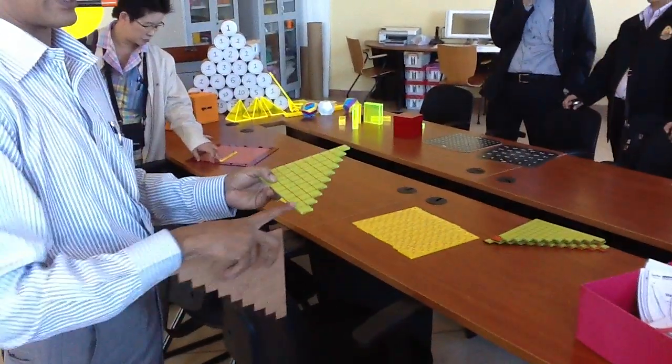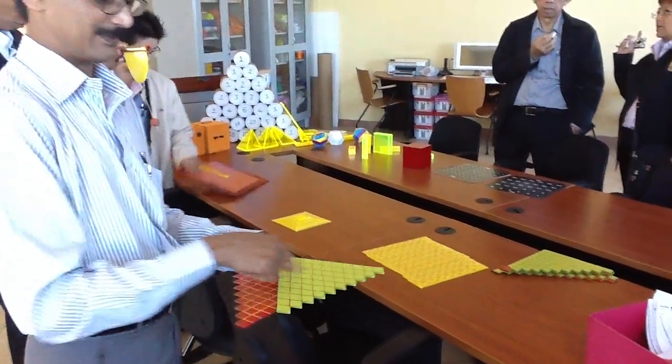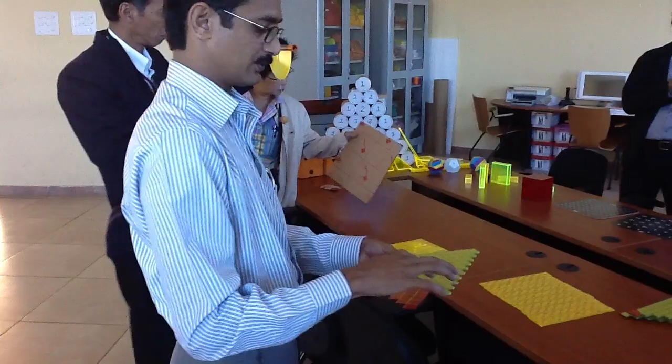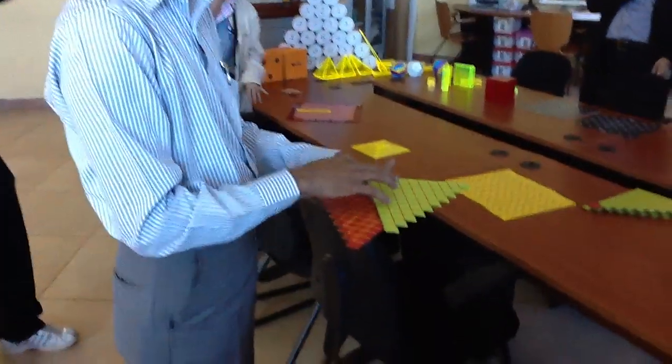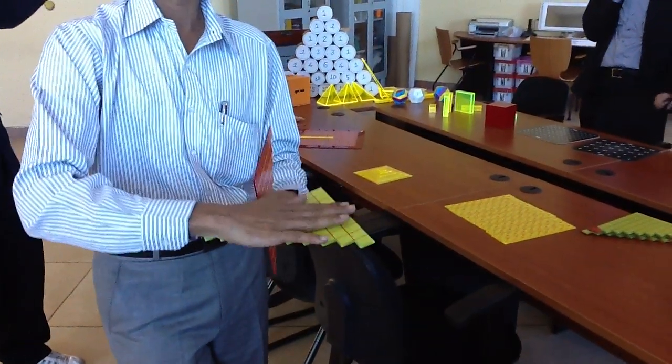For instance, this one. The sum of N natural numbers. Natural numbers 1 plus 2 plus 3 plus 4 plus 5 plus 6 up to 10. 1, 2, 3, 4, 5, 6, 7, 8, 9, 10. So we want to find out 1 plus 2 plus 3 plus 4, which is this.